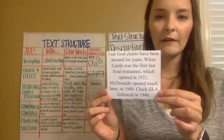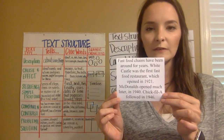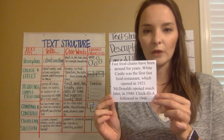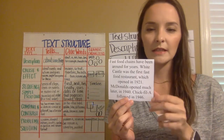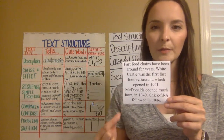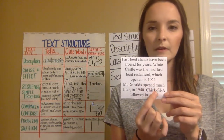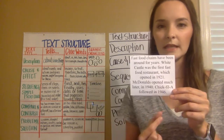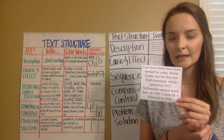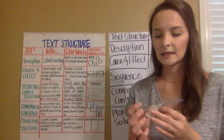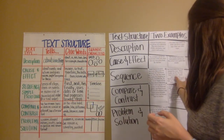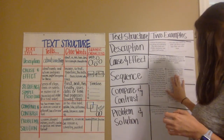Next card: Fast food chains have been around for years. White Castle was the first fast food restaurant, which opened in 1921. McDonald's opened much later in 1940, and Chick-fil-A followed in 1946. We see three different dates — 1921, 1940, and 1946 — so this text structure is sequence, giving us the dates things happened in.